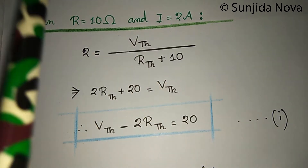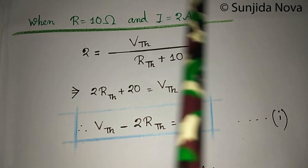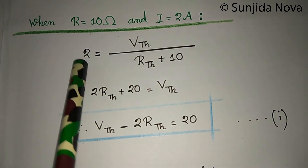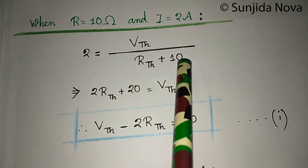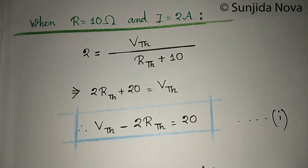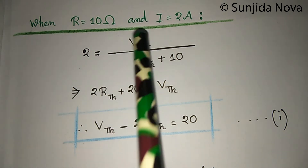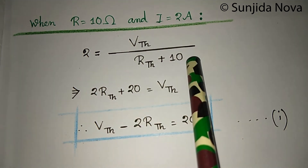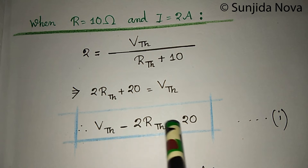We can find that for R equal to 10 Ohm, the equation is: 2 equals V-Thevenin divided by (R-Thevenin plus 10). Because R-Thevenin and the load resistance are connected in series, and in a series circuit the current is the same throughout. So the equation becomes: 2 equals V-Thevenin divided by (R-Thevenin plus 10), which gives us V-Thevenin minus 2·R-Thevenin equals 20.